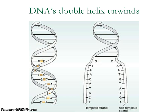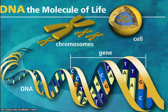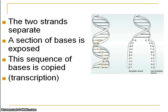At the start, the DNA molecule with its double helix unwinds. It's not the whole molecule — just a section or a gene that unwinds, the gene responsible for the production of a particular protein. The two strands separate, exposing the bases, and the sequence of bases on the revealed DNA strand is copied.